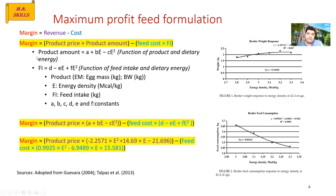If you pay attention, instead of product amount I have put the regression equation for broiler body weight, and instead of feed intake I have put the regression equation for feed intake. The unknown component here is E — dietary energy — because determining dietary energy is the first step in feed formulation. We will determine the optimum energy level based on product price, such as chicken price, and feed cost.